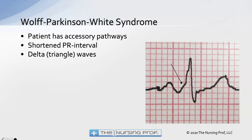With WPW, what you might see is a shortened PR interval and what's called a delta wave, illustrated on this EKG. The delta wave looks like a triangle — when you look at the P wave going into the QRS complex, instead of going right into a nice straight upstroke, you see a slanted movement from baseline at an angle before moving into the QRS complex. That slant is called a delta wave.